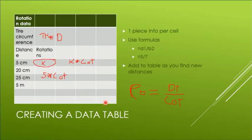You're gonna create a data table and hopefully you've watched the data table video. If you haven't seen the data table video, go ahead and make sure you see that. In your data table, it's gonna look something like this: you're gonna have rotation data as the title, you're gonna have tire circumference and you'll put that number here, and you'll have distance - five centimeters, twenty centimeters, twenty-five centimeters, five meters - and then you'll have a column for rotations. You can use formulas like D1 divided by B2 equals the rotations.